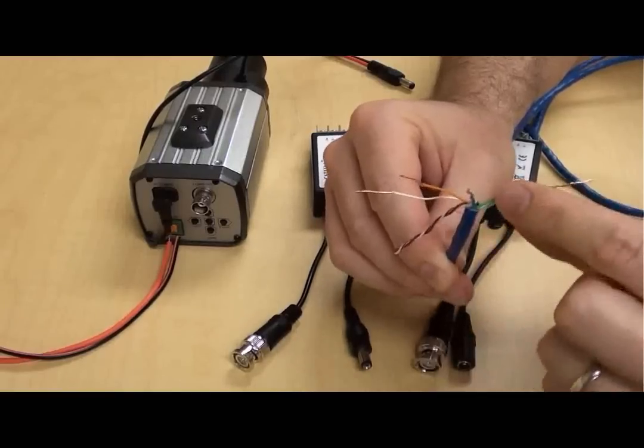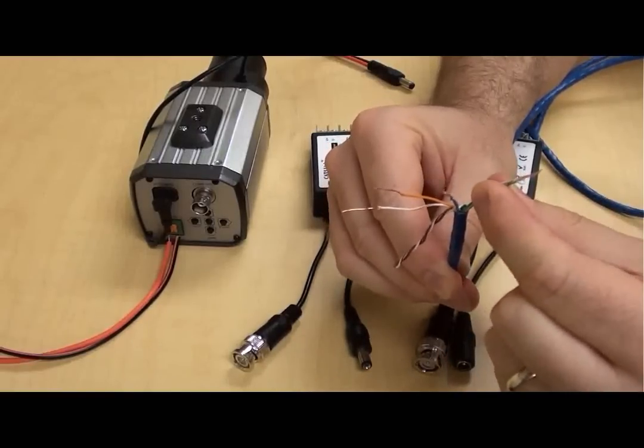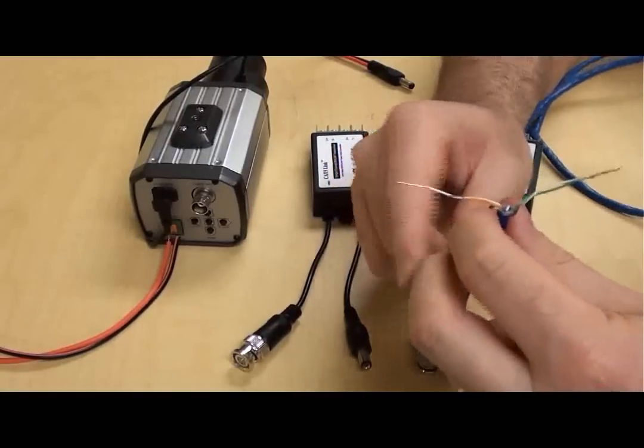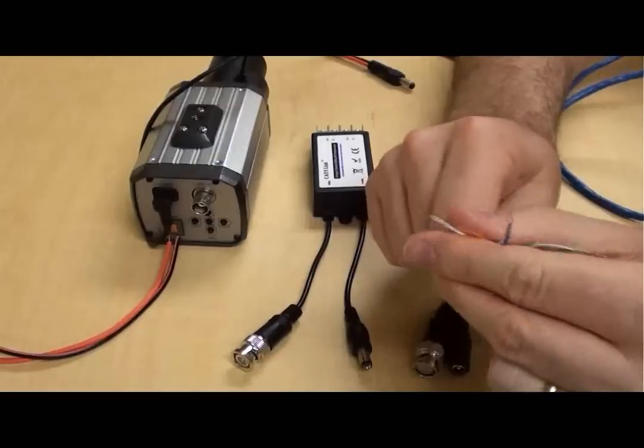Please note after stripping the two power pairs, each of the pair ends are twisted back together so that we use one complete pair for positive and one complete pair for the negative power connections.